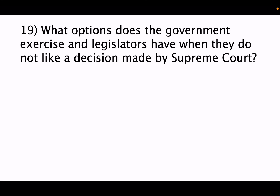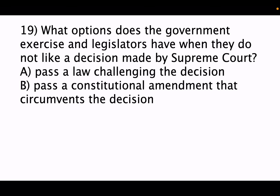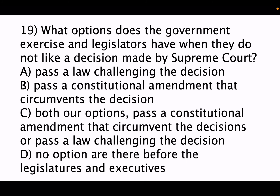Nineteenth question: what options do the government and legislature have when they do not like a decision made by the Supreme Court? Option A: pass a law challenging the decision. Option B: pass a constitutional amendment that circumvents the decision. Option C: both — pass a law challenging the decision or pass a constitutional amendment. Option D: no options are available. The correct answer is option C.